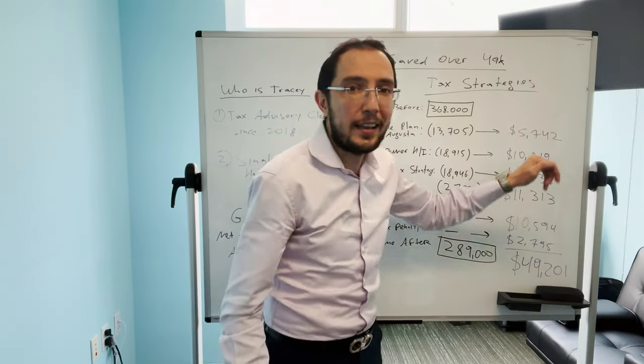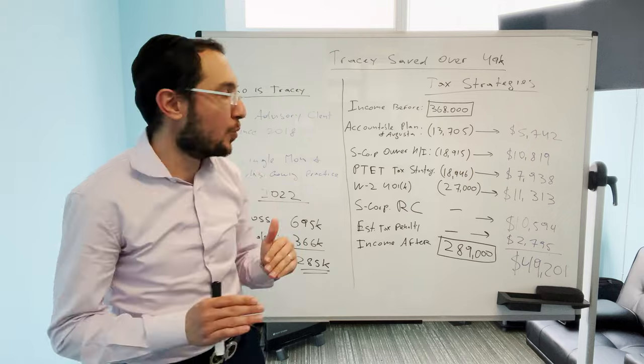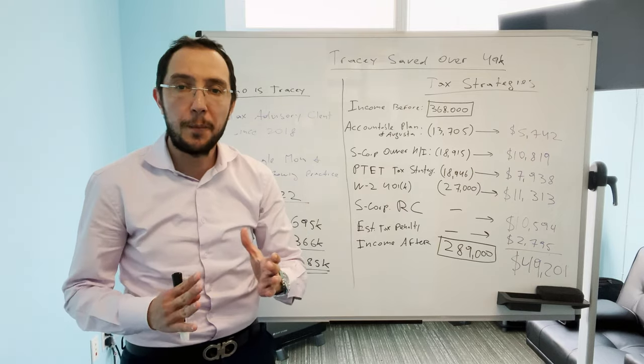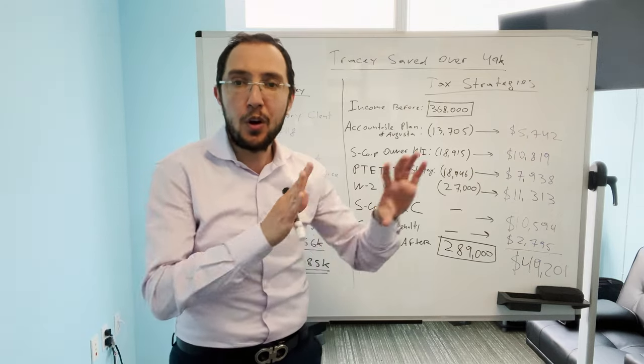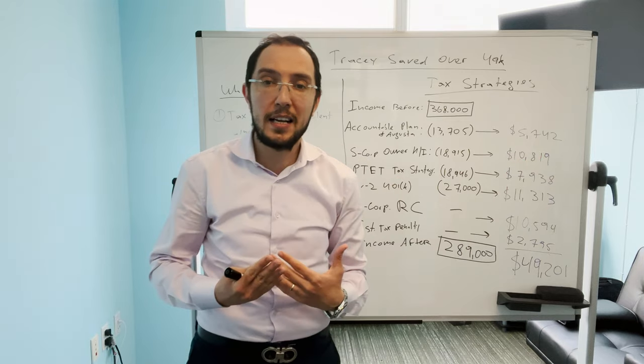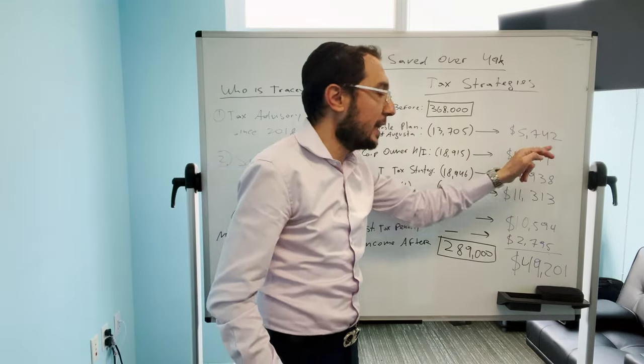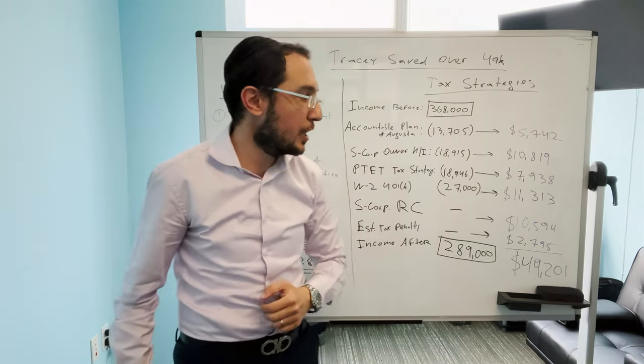So because Tracy is in the line of business where she needs to have a conference room for certain meetings, for signing certain deals and contracts, instead of renting out a conference room somewhere else, she uses her home as that and she properly documents everything. None of the tax strategies ever learned should be used without proper documentation and assistance from your tax advisor. Using the accountable plan and an Augusta tax strategy, she was able to reimburse herself over the course of the year, $13,705 and that saved her $5,742 in taxes. This strategy alone put $5,700 in her pocket.